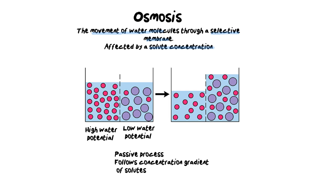Osmosis is a passive process which means it follows a concentration gradient. However, what's really important is that it follows the concentration gradient of the solutes. Water wants to be around the solutes — it's attracted to them, whether it be a salt or some other ion. Water will move towards the solutes because it wants to dilute them.